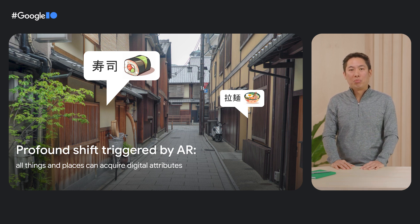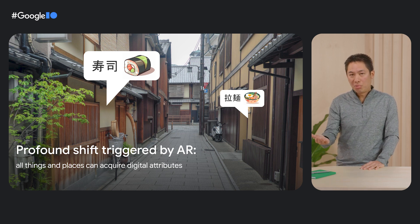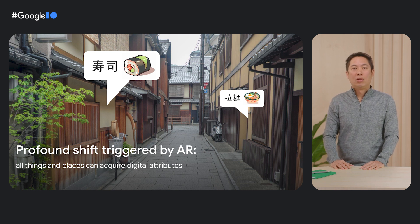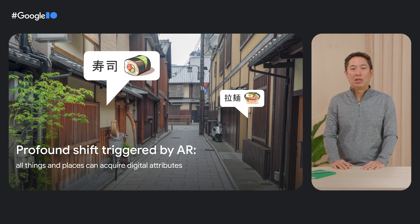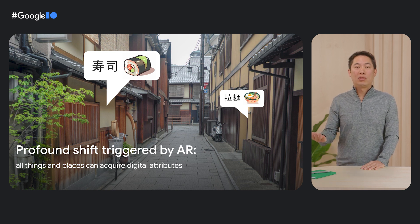Knowledge about things and places will increasingly appear to reside in the physical things and places themselves. For example, a local gallery can add helpful information and knowledge about the artist and shows directly over the art pieces or the building. The physical objects and places themselves will increasingly become the canvases for personalized, immersive, and rich experiences. For example, a music band can digitally take over a whole city and make it their stage for a virtual concert.